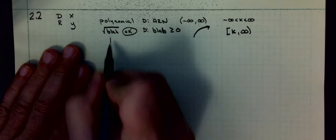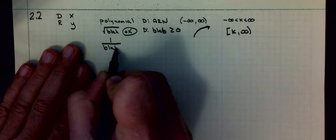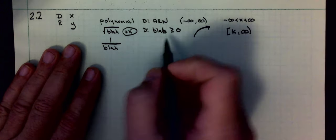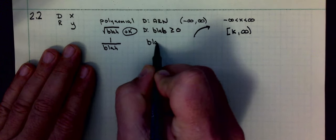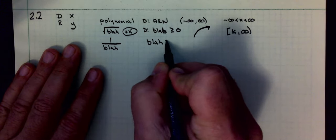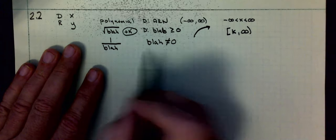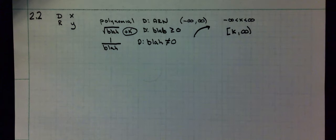If I have a rational function, the domain of a rational function would be everything except where the bottom is equal to zero. So my domain would be anything that makes it not equal to zero.